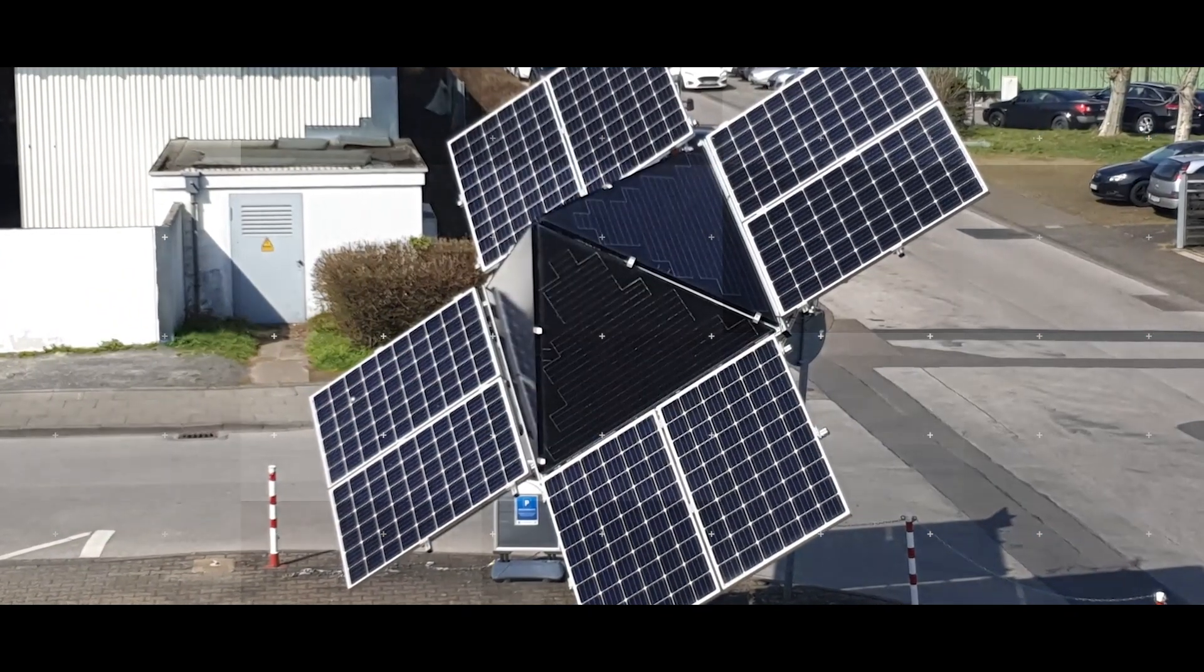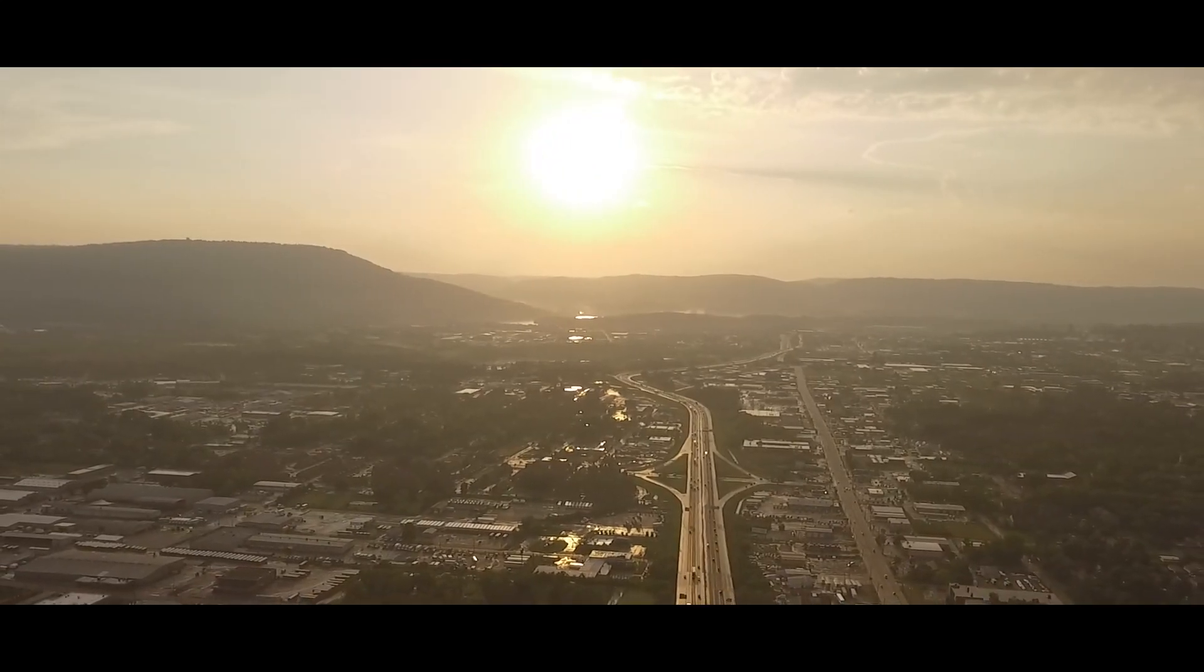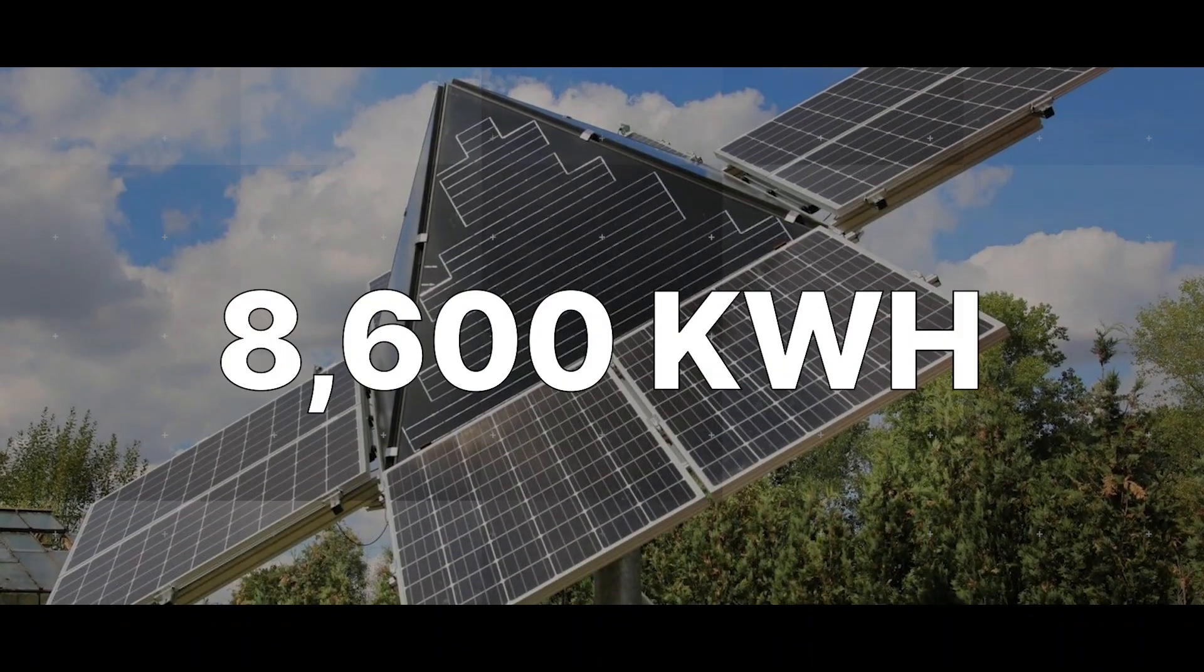The smaller model produces an average of 4,900 kilowatt hours measured against solar radiation in Germany, while the larger model produces an average of 8,600 kilowatt hours per year.